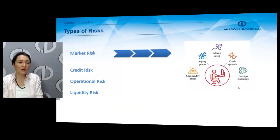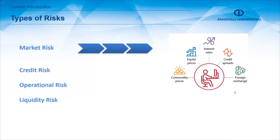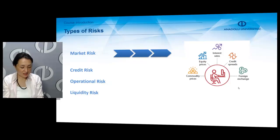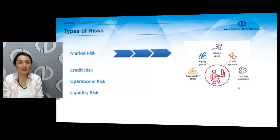There are different kinds of risks: market risk, credit risk, operational risk, and liquidity risk. This chapter covers those four kinds, though you may see other types as well. Market risk is the risk related to a financial institution's financial condition resulting from unexpected market movements in the price or level of certain risk factors.